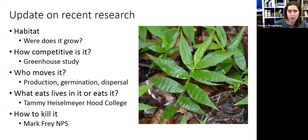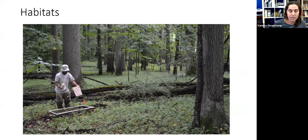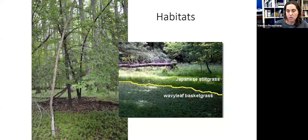My lab has been doing quite a bit of research on this plant, trying to figure out basic ecology: where does it grow, how competitive is it, how easily is it dispersed, does anything eat it, and how do you get rid of it. We're really interested in where it's able to grow. It clearly likes forest understories. What you're seeing here is a site in Patapsco Valley State Park near the initial introduction site — other than the big Japanese Barberry in the middle, pretty much everything in the understory is wavy leaf basket grass.